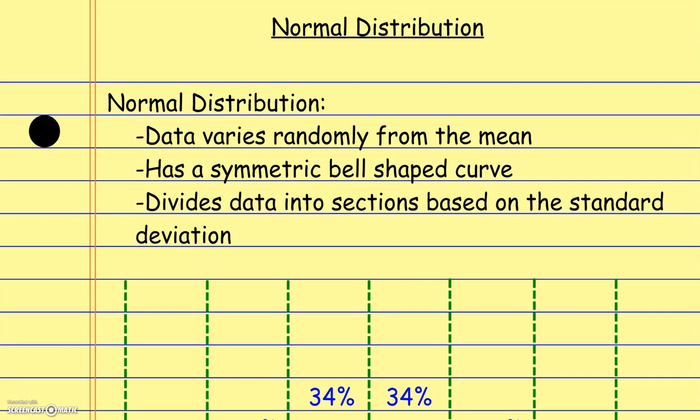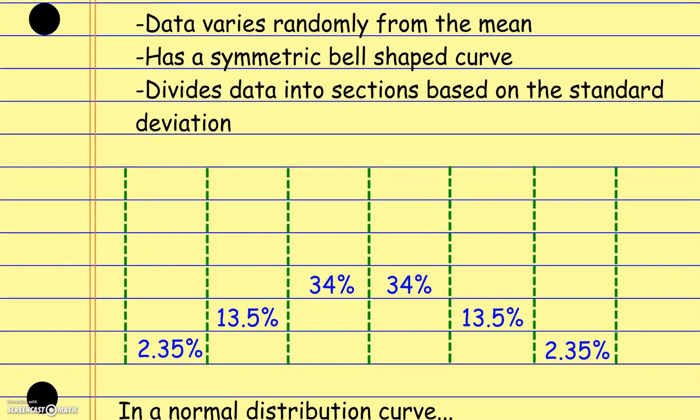The neat thing about a normal distribution curve is it divides the data into sections based on the standard deviation, and each of those sections contains a certain percentage of the population, or a certain percentage of those surveyed. So when you look at a standard bell curve, this is what it's going to end up looking like.